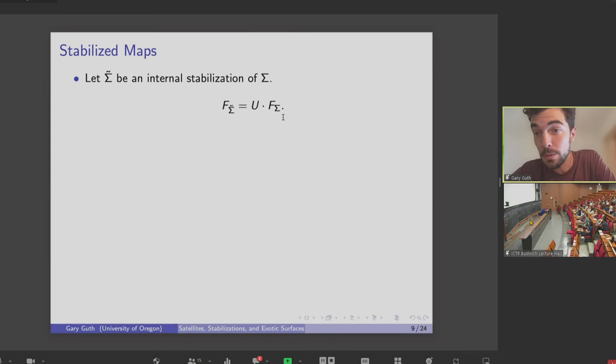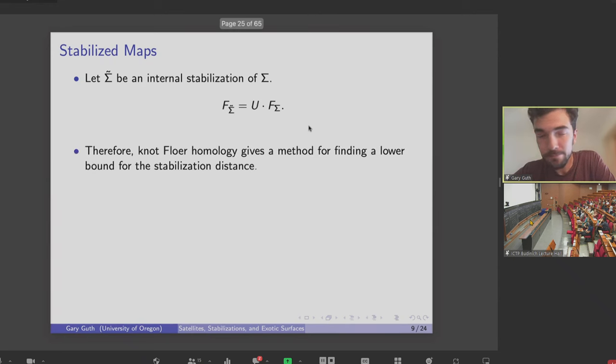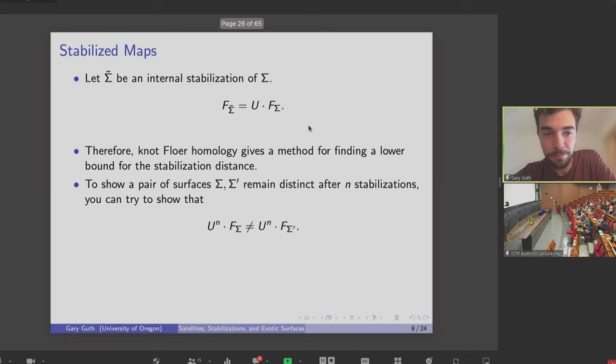So if sigma tilde is a result of an internal stabilization of sigma, then you can write down explicitly what the induced map is in terms of the map induced by sigma. F sigma prime is just U times F sigma. And this means that knot Floer homology immediately gives you a method for finding a lower bound for the stabilization distance. If you've got a pair of surfaces, sigma and sigma prime, and you want to show that they're still going to be distinct after you stabilize N times, what you can try and do is show that the two maps are going to be distinct after you multiply by U to the N.